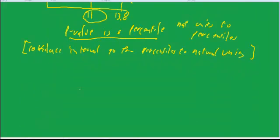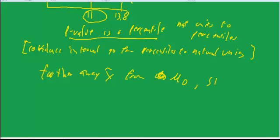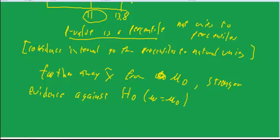And that is our measure of how far away our sample result is from our original hypothesis. The farther away it is, the stronger the evidence against the original hypothesis. So the farther away x-bar is from mu-naught, the stronger the evidence against the null hypothesis that mu equals mu-naught.